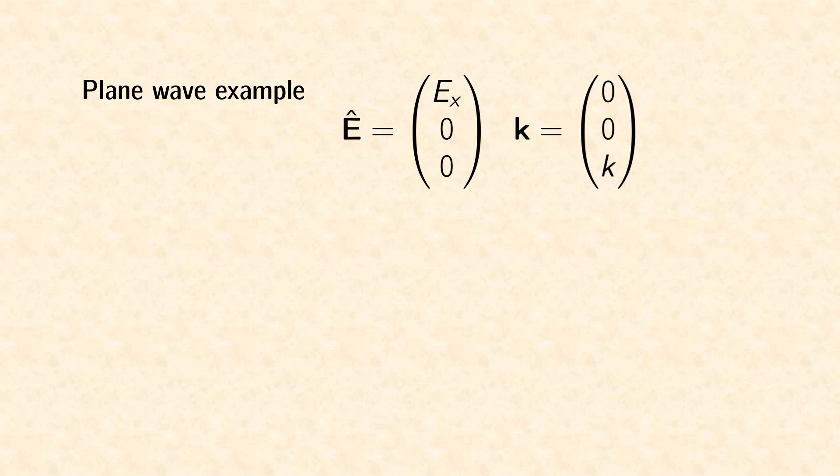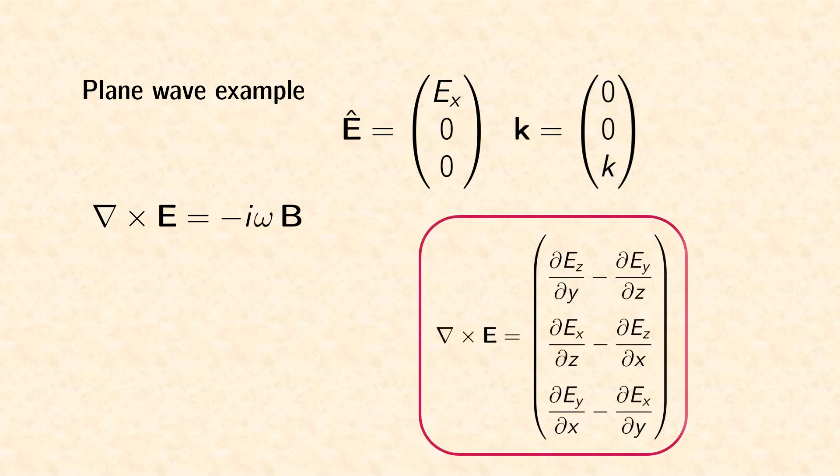In order to get the associated magnetic field, we use Faraday's law for harmonic waves. A closer look at the curl reveals that our choice of the coordinate system turns most terms to zero, because the y and z components of the electric field are zero.